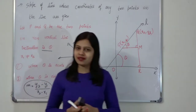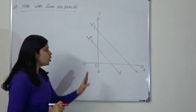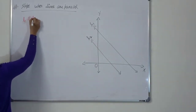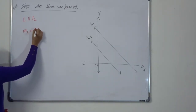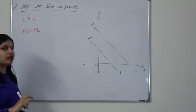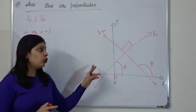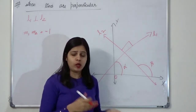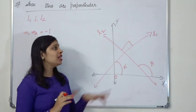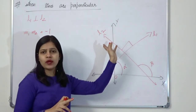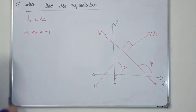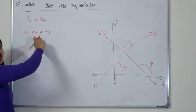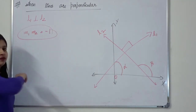If L1 and L2 are two parallel lines, their slopes are equal: m1 equals m2. For perpendicular lines — if L1 is perpendicular to L2, then the product of their slopes equals minus 1: m1 times m2 equals −1. We have seen these three results as direct formulas; we will see the proofs in the next video. Till then, bye bye.